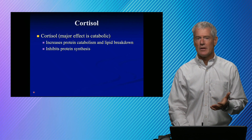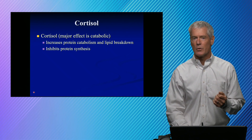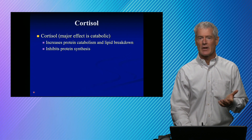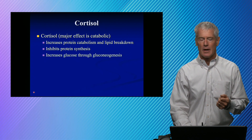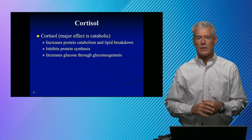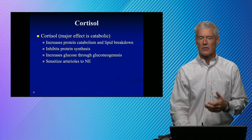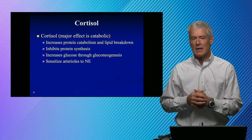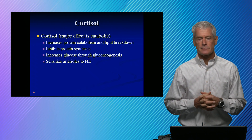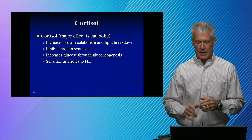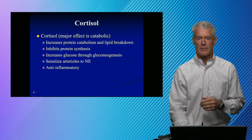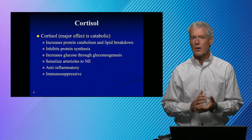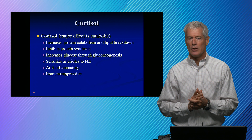It inhibits protein synthesis, and so one of the things you'll see in patients with Cushing's is that they get easy bruising because they're not synthesizing clotting factors as well. It causes hypertension because it sensitizes arterioles to norepinephrine, and so that's going to be a hypertensive effect.